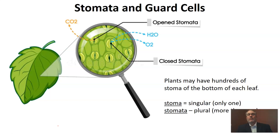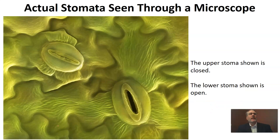Remember, 'stoma' is singular — meaning only one — while 'stomata' is plural, meaning more than one. If we were to look at an actual plant under a microscope, here's a good example showing the bottom of a plant leaf. We can see two stomata: the one in the top left is closed — you can clearly see the guard cells have pinched that mouth shut — and the one in the bottom right has been opened. That gives us a good idea of what open and closed stomata look like.